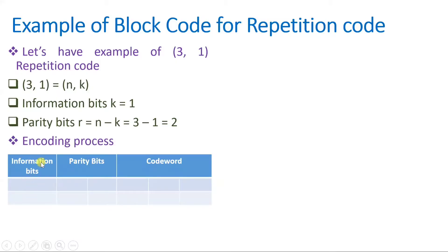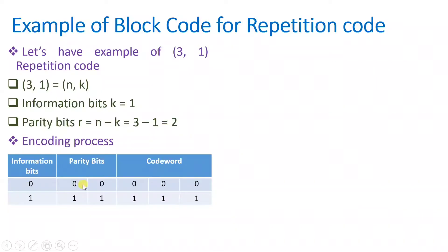In the encoding table, the first column shows information bits (0 or 1), then parity bits as repetitions of the information bit, and the resultant codeword is the combination. If information is 0, parity bits are 0, 0, and the codeword transmitted is 0, 0, 0. If information is 1, parity bits are 1, 1, and the codeword is 1, 1, 1. For a 4-comma-1 code there would be 3 parity bits, giving codewords of four zeros or four ones. This repetition of information is why it is called repetition code.